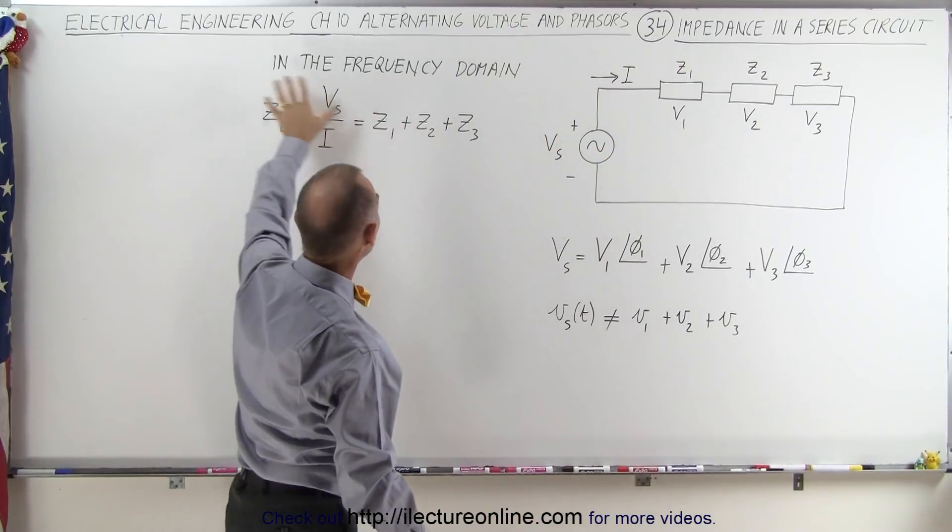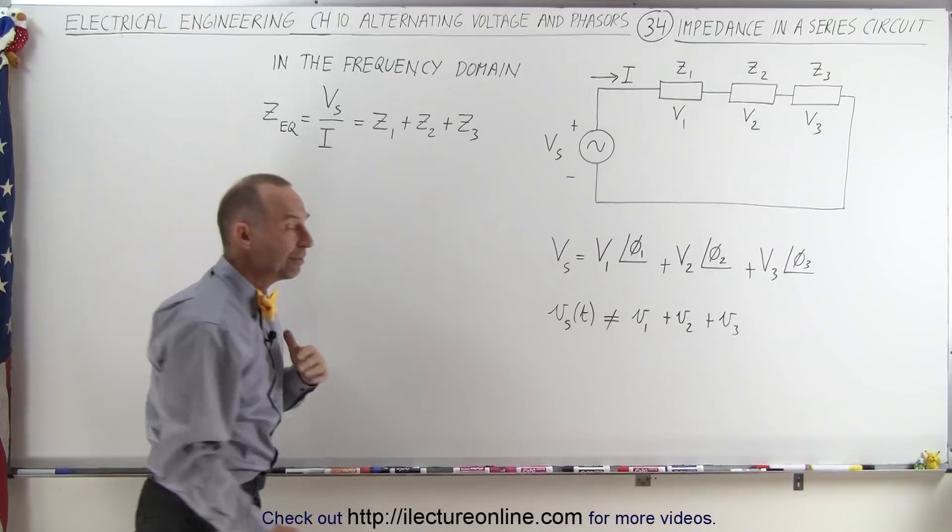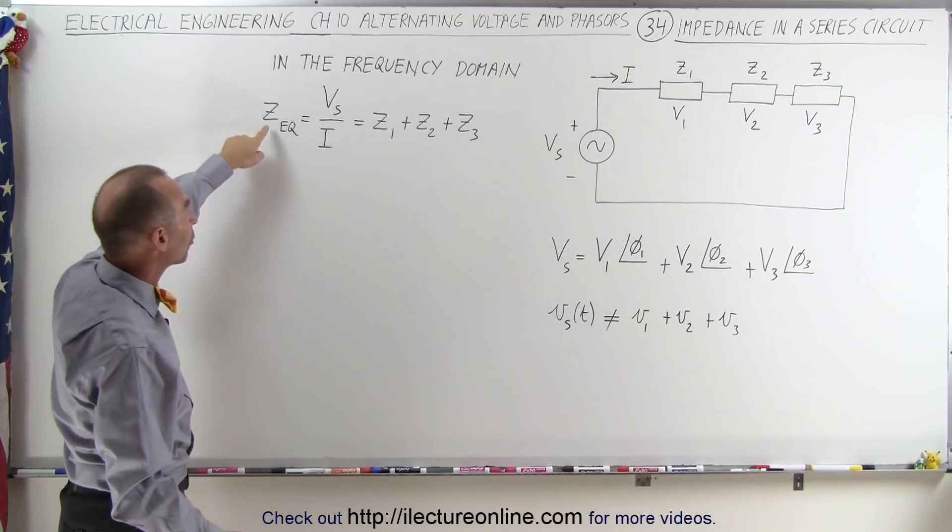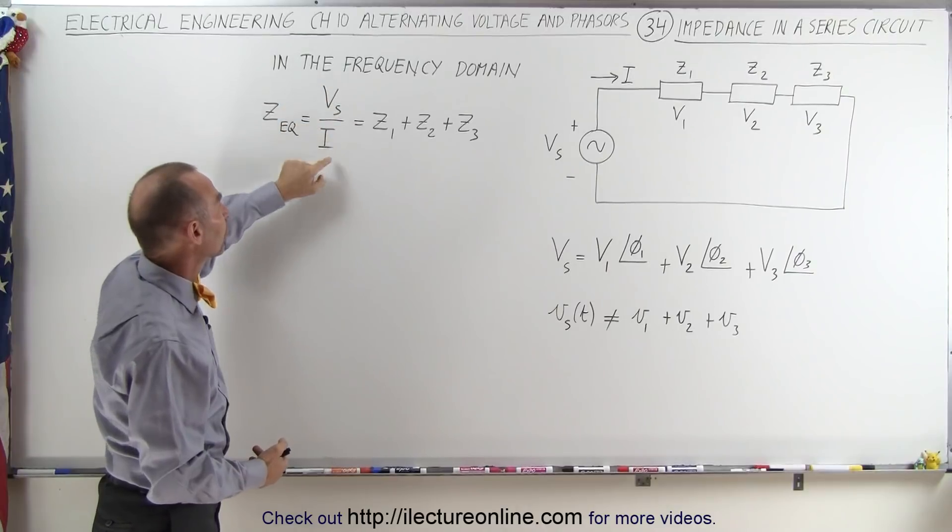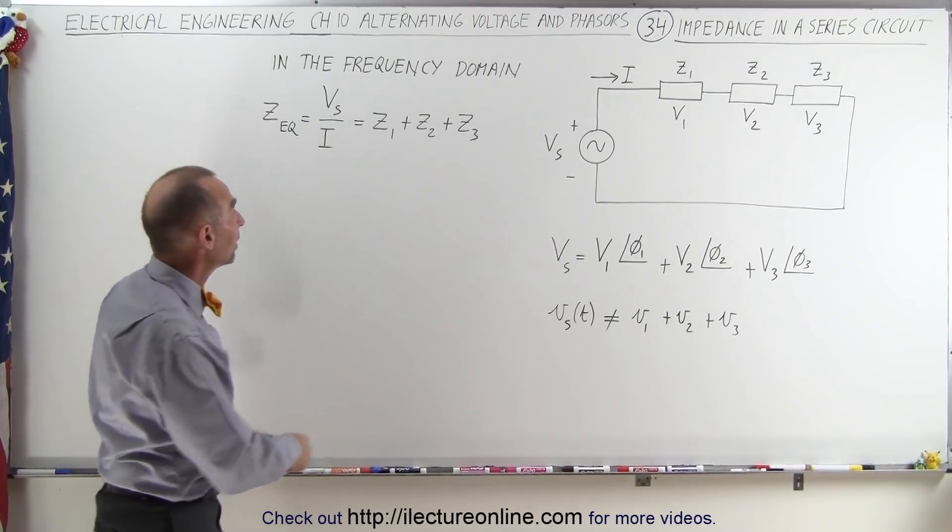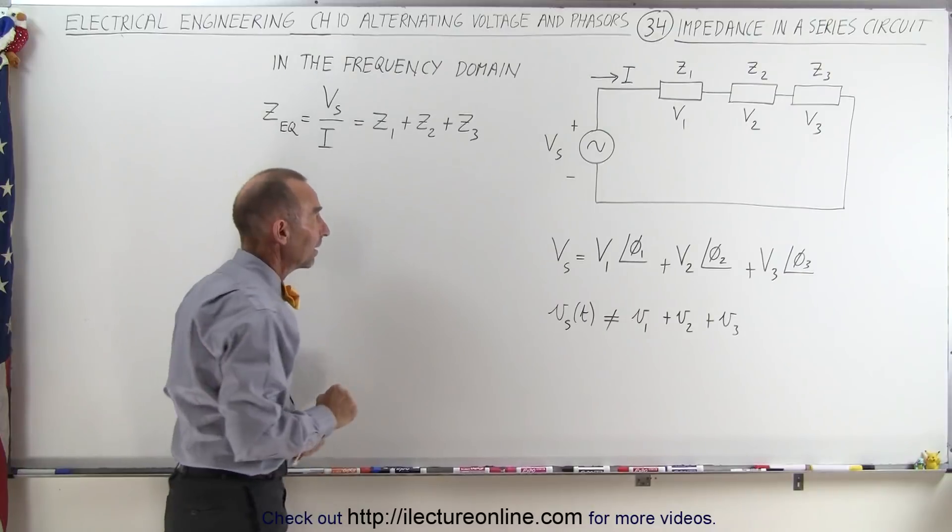Notice that we have everything in terms of the frequency domain, and if we do that, we can say that the equivalent or total impedance is simply equal to the source voltage divided by the total current in the circuit, which is simply the sum of the impedances like this.